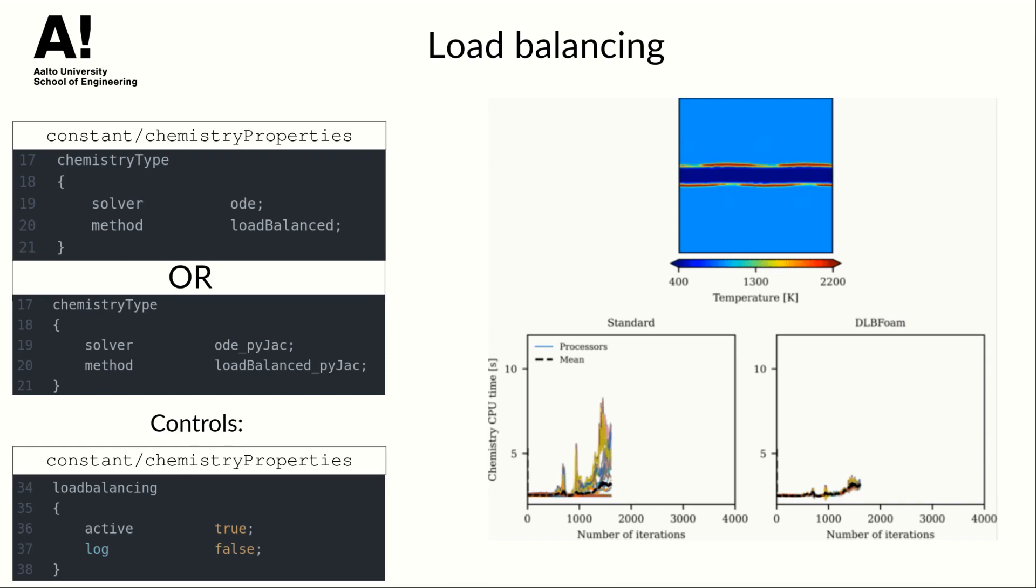The load balancer in DLBFoam mitigates this issue by redistributing chemistry problems between processors dynamically. Its performance can be seen on the animation. Here you can see the CPU time spent on the chemistry by a processor plotted versus the number of iterations which is in fact versus time. Some processors spend significantly more time on the solution forcing other processors to wait for them to finish. Here you can see the same figure after application of DLBFoam so the total time spent on the chemistry solution is reduced by an order of magnitude.